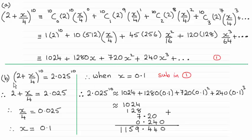And then in Part B, you had to get an approximate value to 2.025 to the power 10, and as you can see, it turned out to be 1,159.44 approximately.